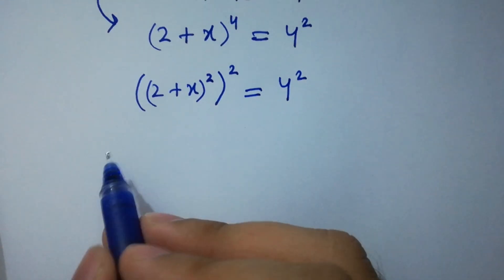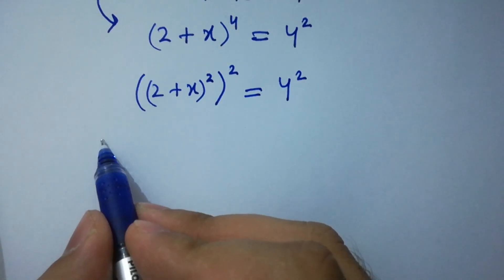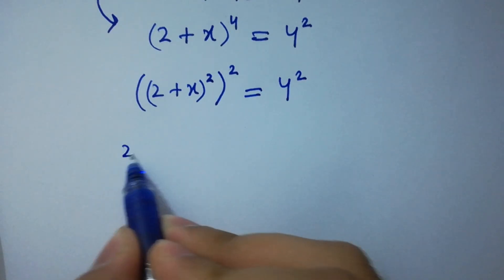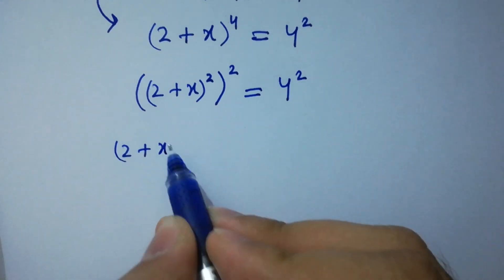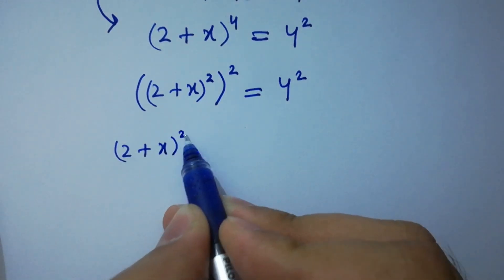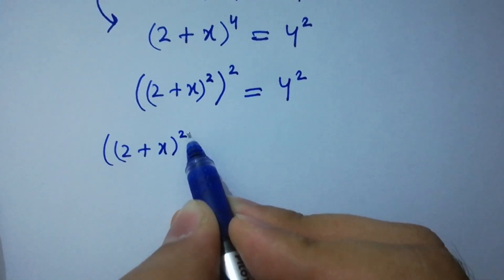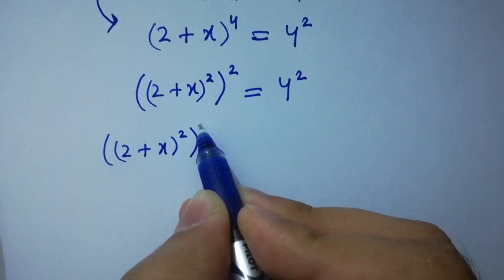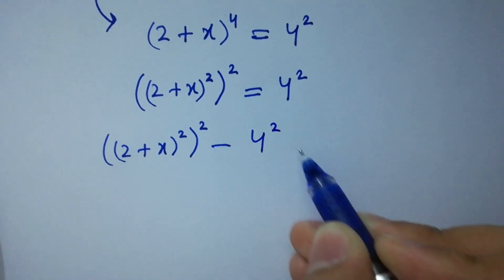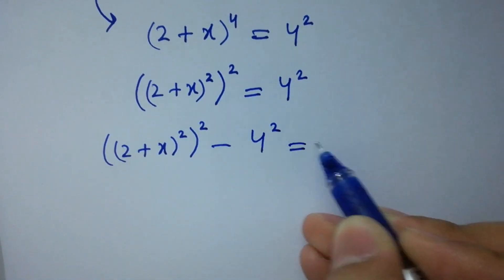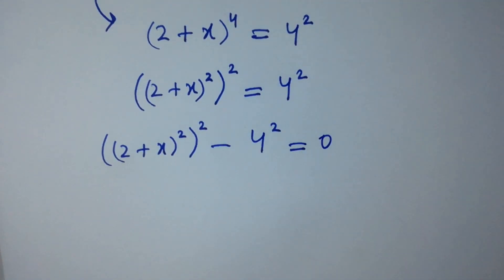However, it can be written as (2 + x) to the power 2, to the whole power 2, minus 4 squared, equal to 0.